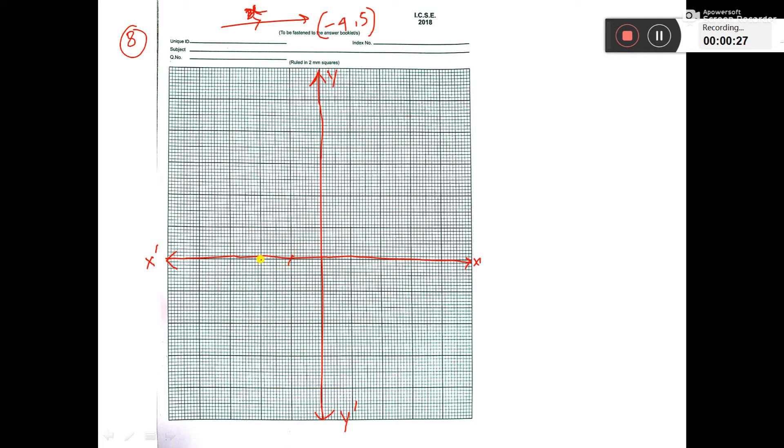1, 2, 3, 4, this is minus 4 comma 5, that is 1, 2, 3, 4, 5. So here is the point minus 4 comma 5, you have got this point reflection through x-axis. See, I have written here. Here is the x-axis.